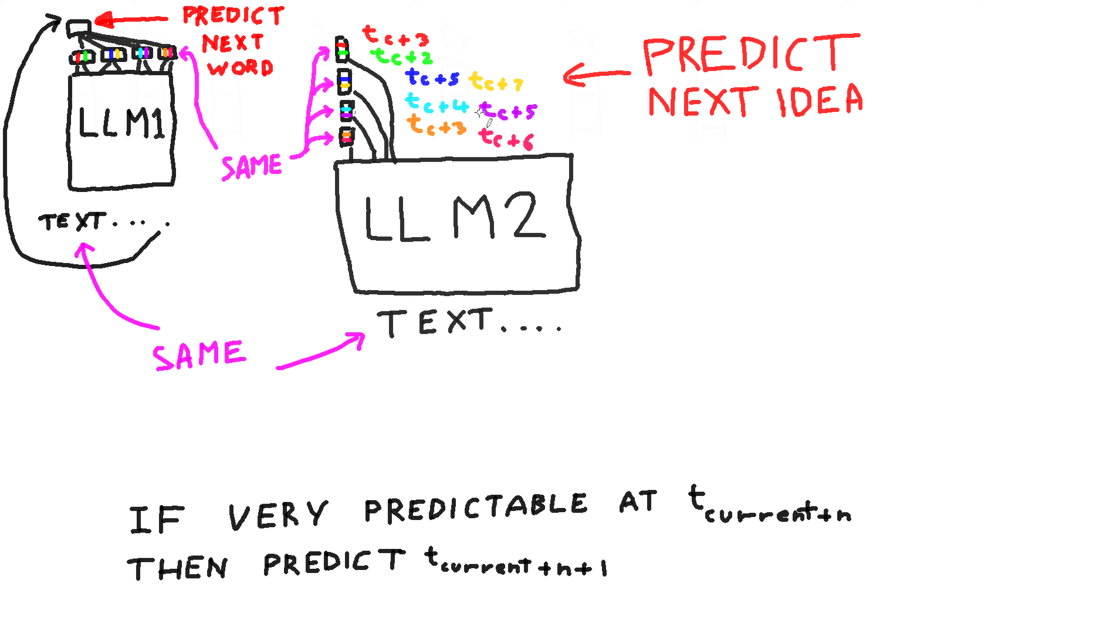But what we really want to do is not be able to predict things perfectly, because that means that we are really not challenging the network. We want to have some level of ability to predict the next value, but we don't want it to be absolutely perfect, so that means we're pushing it just to the limit.